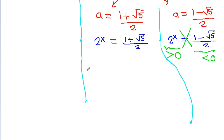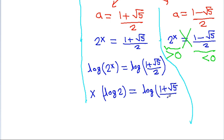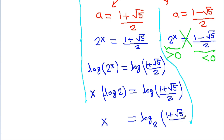So we have 2 to the power x equals (1 plus root 5) divided by 2. Taking log on both sides, log of 2 to the power x equals log of (1 plus root 5) divided by 2. This gives x times log 2 equals log of (1 plus root 5) divided by 2, so x equals log base 2 of (1 plus root 5) divided by 2. That is the value of x.